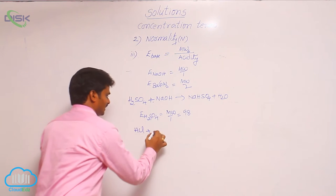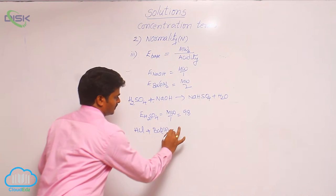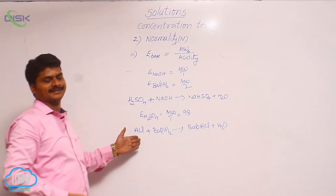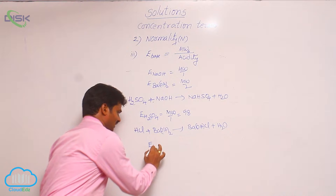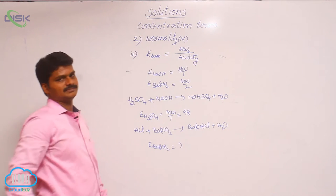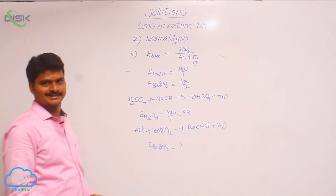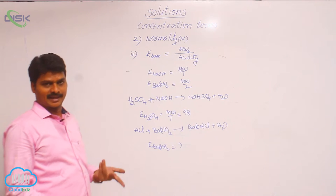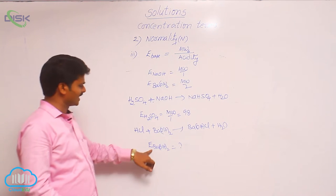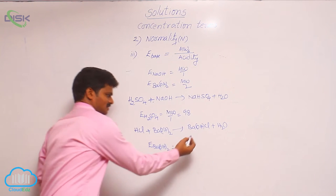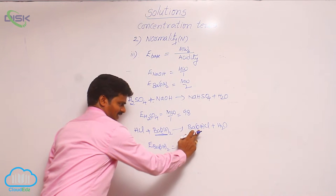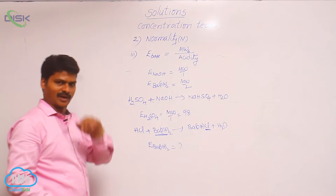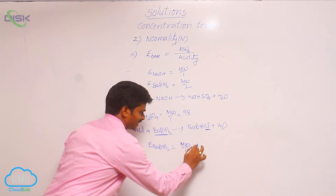Similarly for a base: HCl plus barium hydroxide react to give BaOHCl plus water. In this reaction, what is the equivalent weight of barium hydroxide? The formula gives molecular weight divided by acidity; barium hydroxide's maximum acidity is 2. But in this reaction, barium hydroxide initially has 2 OH groups, and only 1 OH is replaced — 1 OH group is left over. So the number of replaceable OH groups here is only 1, and equivalent weight equals molecular weight divided by 1, i.e., molecular weight.